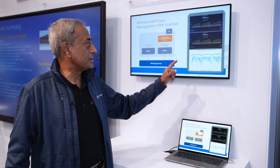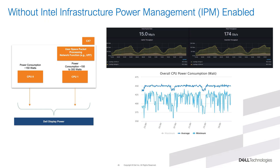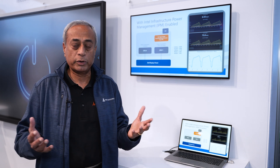In the previous case, if you look at the graph, the power consumption across both CPUs remains more or less a constant 450 watts. But here, with IPM, the power consumption varies — when there is not much throughput it goes down, and when throughput increases the power consumption goes up. So you can see how it varies across the busy hour and not-so-busy hour periods during the entire day.